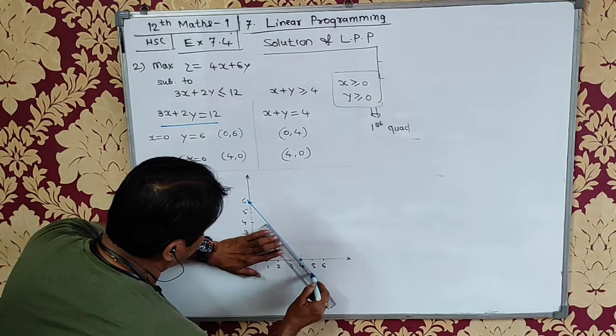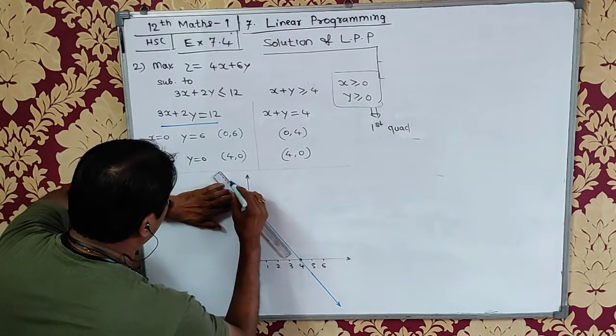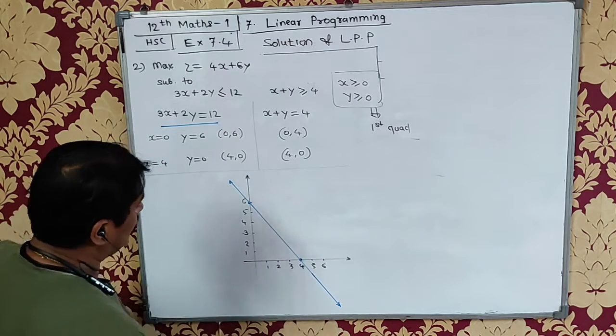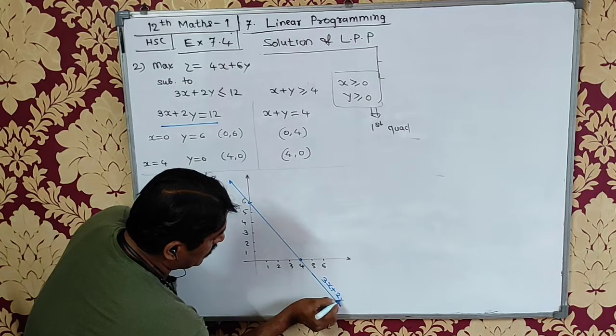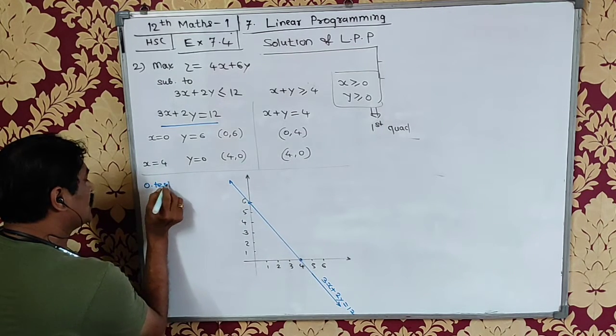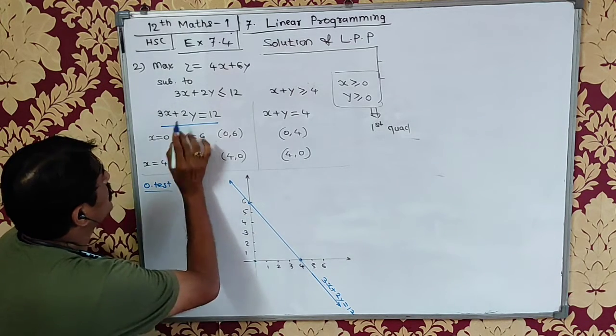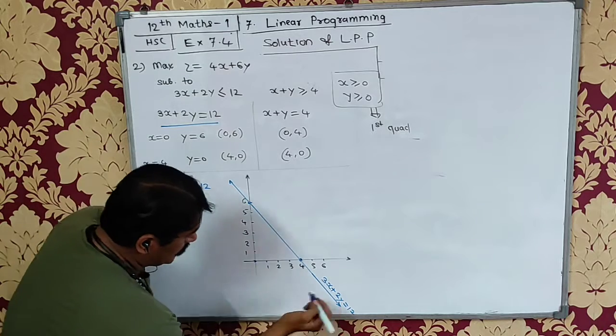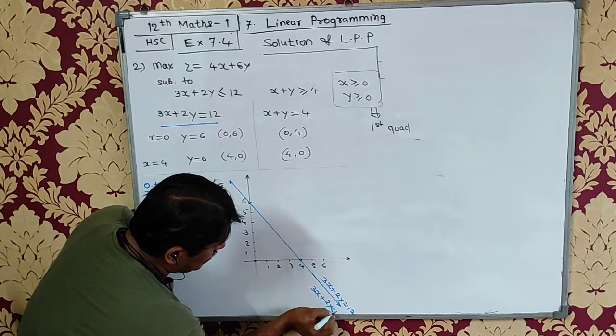I will write down the equation here: 3x plus 2y equals 12. Now my origin test: this is the origin. If I substitute 0 plus 0, it will be 0 and 0 is less than 12. So on the origin side, it is 3x plus 2y less than 12.